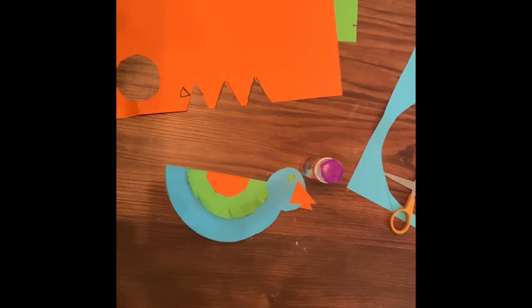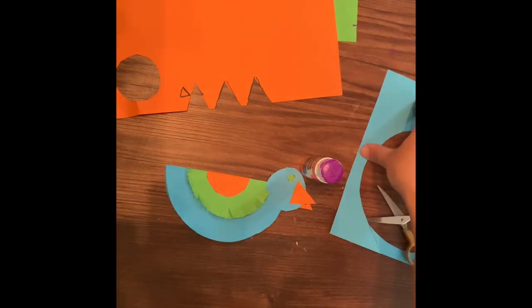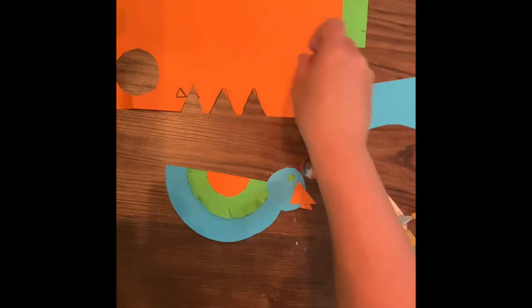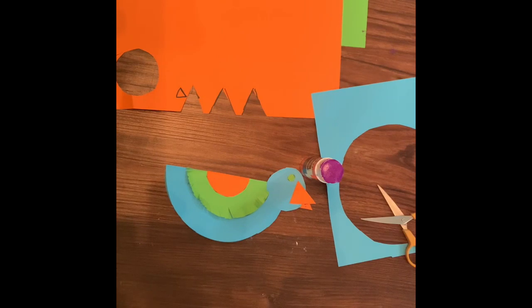Alright guys, now we're going to make the tail. So we're going to make a big triangle out of the blue, a medium triangle out of the green, and a small triangle out of the orange. Let me show you how to do it.